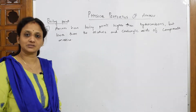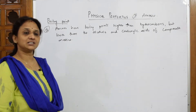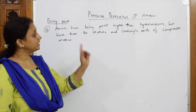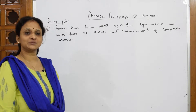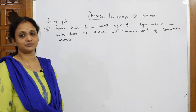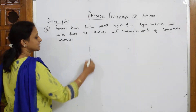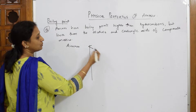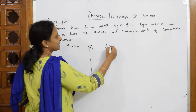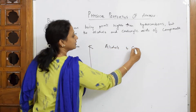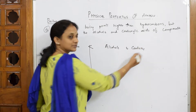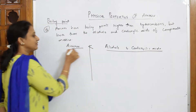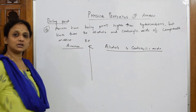Whenever they ask you about solubility or boiling point, speak in terms of hydrogen bonding — that is the easier way of answering. So I have to take amines. They said amines have lower boiling point than alcohols and carboxylic acids. On what basis? Based on hydrogen bonding.